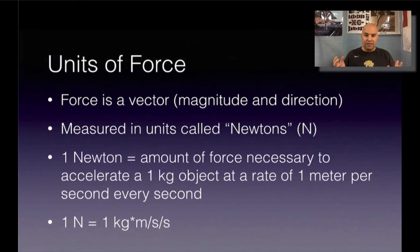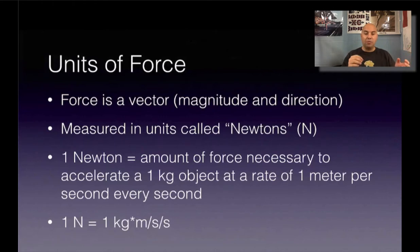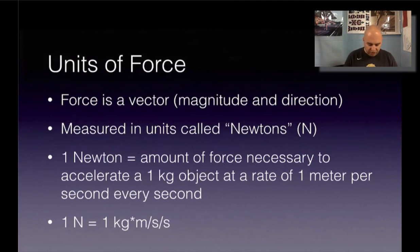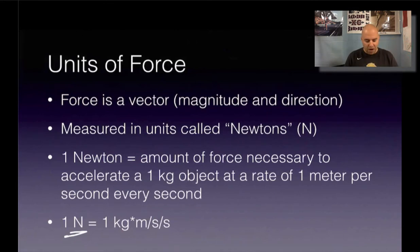What a newton is — it's how much force, how much push or pull would be necessary to accelerate an object that has a mass of one kilogram at a rate of one meter per second every second. So one newton is the same as one kilogram times a meter per second per second.